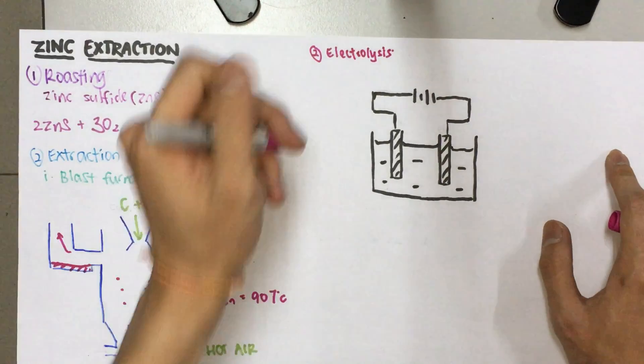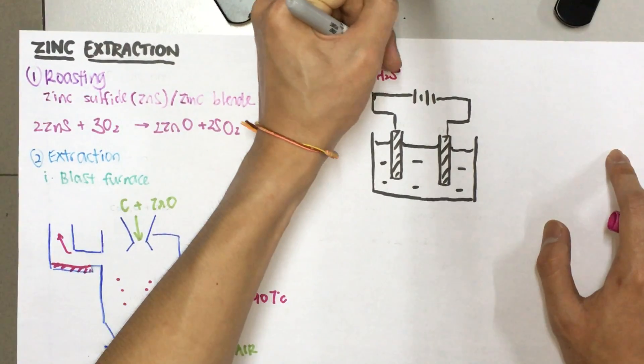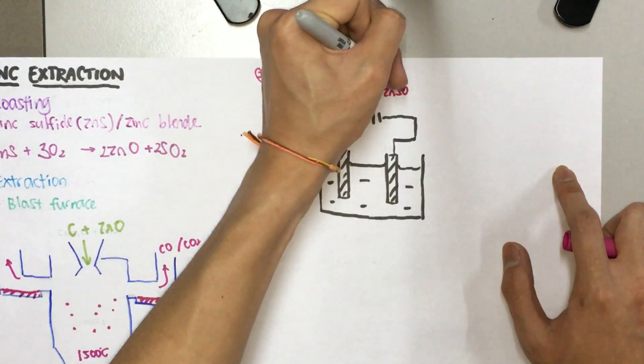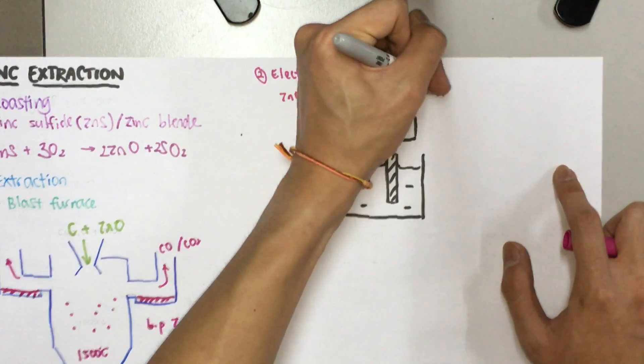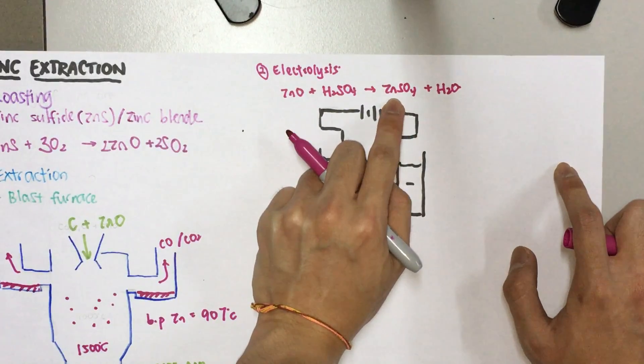You're going to have to react zinc oxide with sulfuric acid to produce the soluble zinc sulfate and water. This zinc sulfate is actually what we're going to electrolyze over here.